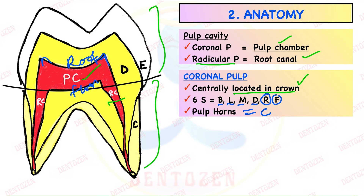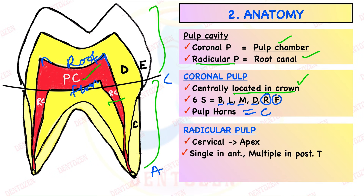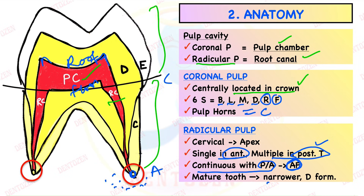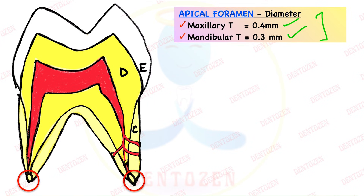Number of pulp horns equals the number of cusps. Radicular pulp starts from the cervical region and goes towards the apex. It is single in anterior teeth because they have a single root, and multiple in posterior teeth because they have multiple roots. They are continuous with the periapical region through an opening called the apical foramen. In the mature tooth it becomes narrower, with a diameter of 0.4 mm in maxillary and 0.3 mm in mandibular.